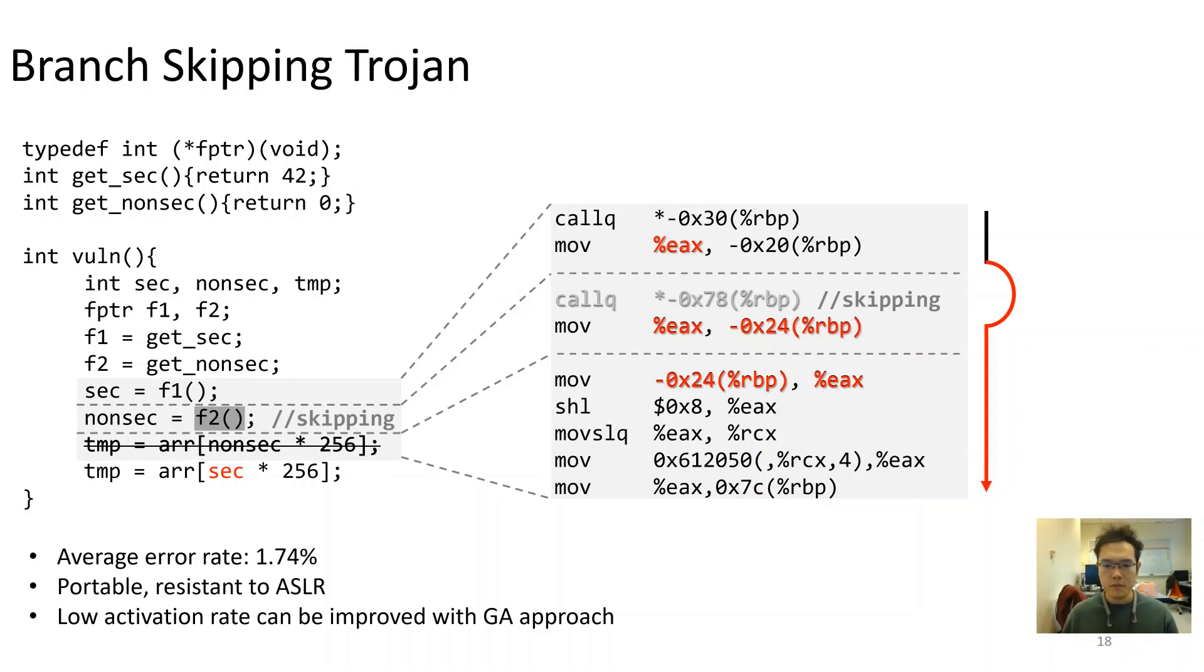Since branch skipping is rare, the activation rate of the original prototype is low. In the next slides, we'll demonstrate how to improve this low activation rate with genetic programming approach.